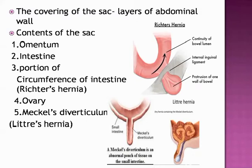The sac can also contain a portion of the circumference of the intestine — that hernia is called Richter's hernia. Here you can see that only a small circumference of the intestine enters the hernia sac; the whole intestine does not go into the sac. The sac can also contain the ovary. At times, the hernia sac may contain Meckel's diverticulum, and that is called Litter's hernia. These are the different contents of a hernia sac.